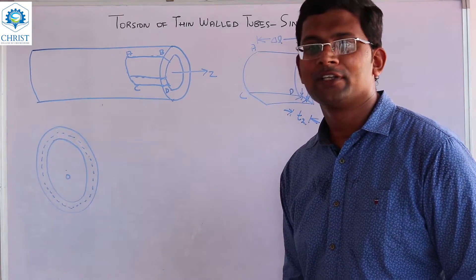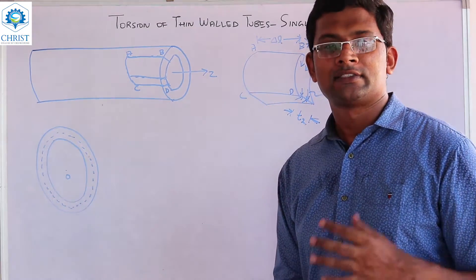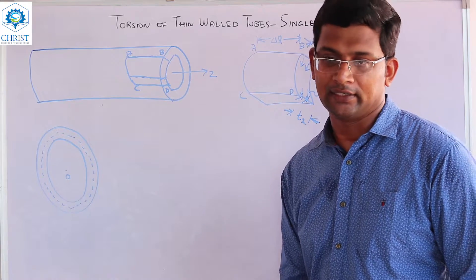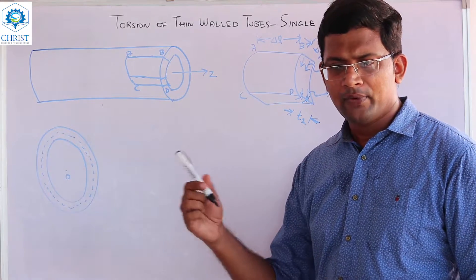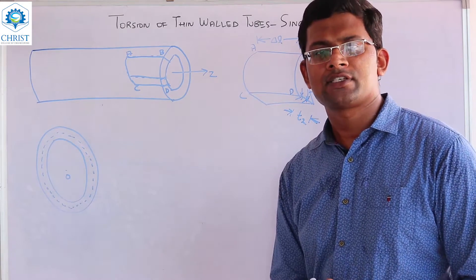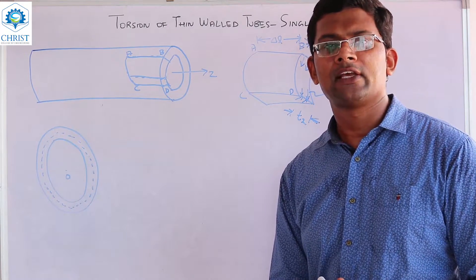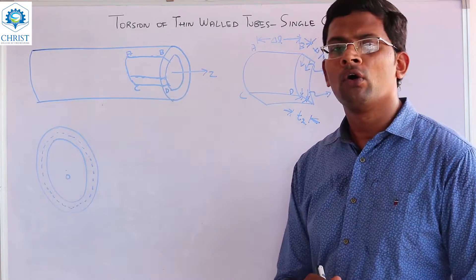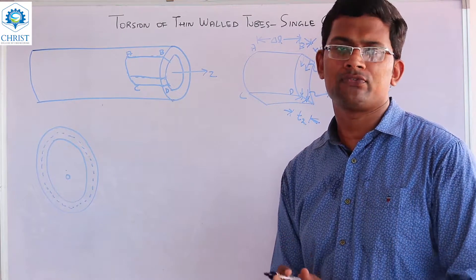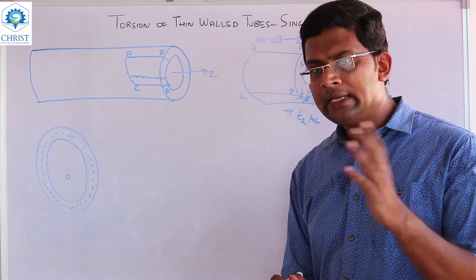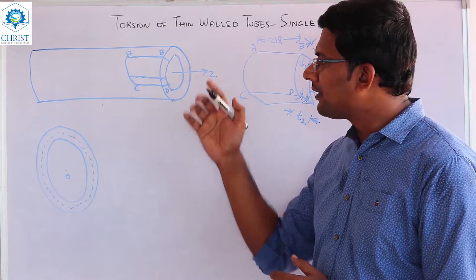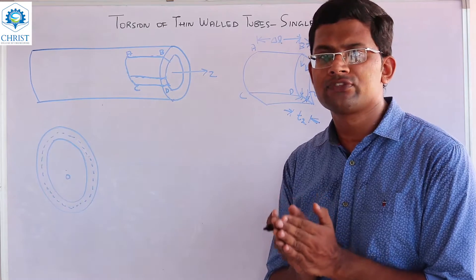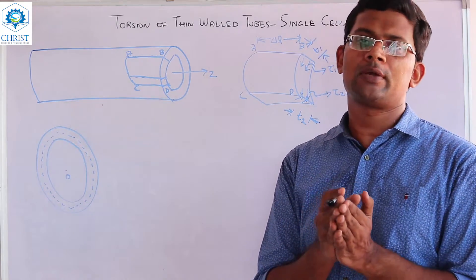We have problems in a circular section and elliptical section. We have a solid shaft in the center, we have a hole in the center, and we have a tubular shaft in torsion.